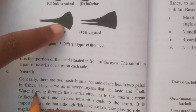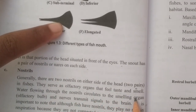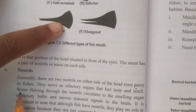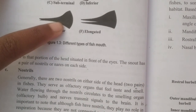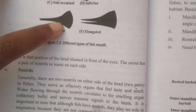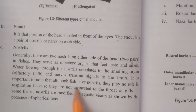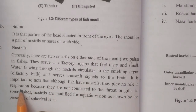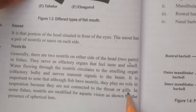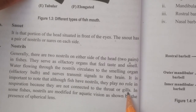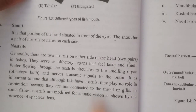Water flowing through the nostrils circulates to the smelling organ. The olfactory bulb and associated structures transmit signals to the brain. It is important to note that although fish have nostrils, they play no role in respiration because they are not connected to the throat or gills.